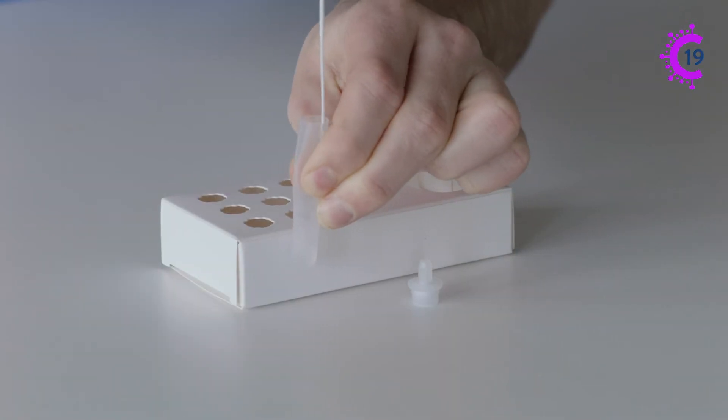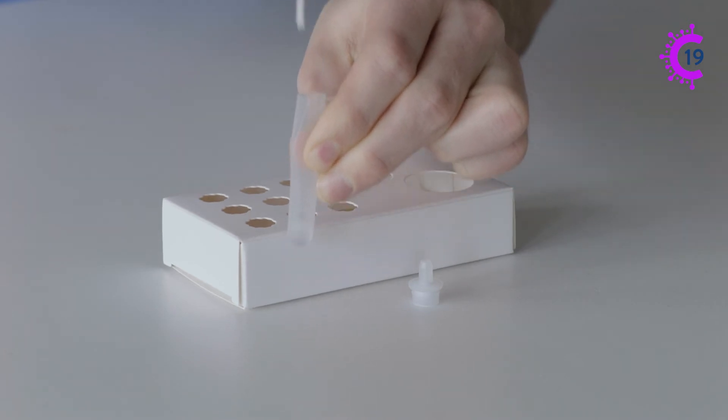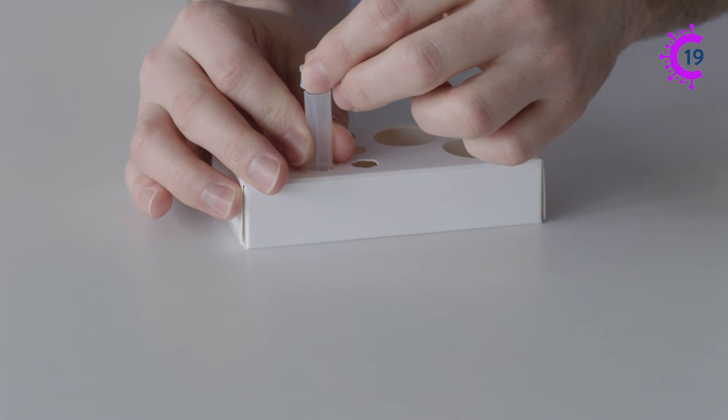Squeezing the outside of the tube with the fingers several times, remove the swab and discard it. Place the top of the lid firmly on the collection tube.